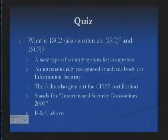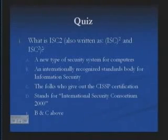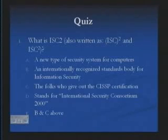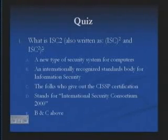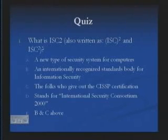Let's take a little quiz to see how you've been doing. Question one: What is ISC Squared? A, it's a new type of security system for computers. B, it's an internationally recognized standards body for information security. C, it's the folks who give out the CISSP certification. D, it stands for International Security Consortium 2000. The right answer is E — because it's both an internationally recognized standards body for information security and it's the standards body that gives out the CISSP certification.